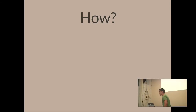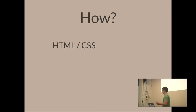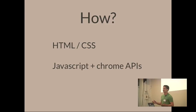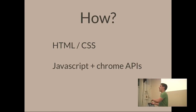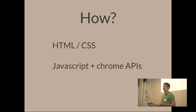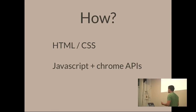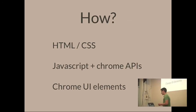How do you build an extension? It's built with stuff we're used to: HTML, CSS, and JavaScript. Chrome also gives you a bunch of JavaScript APIs under the Chrome namespace that let you interact with the browser.